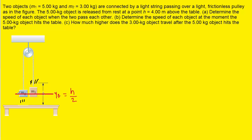We might draw that situation as follows. Mass 2 is moving upward and mass 1 is moving downward, and their final height would be equal to h divided by 2. During this falling and rising of the two masses, we're going to be able to conserve energy, so let's look at that equation.